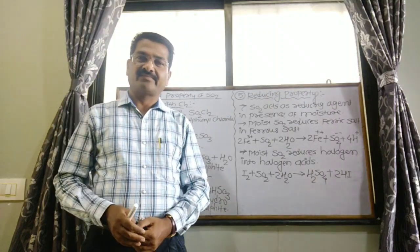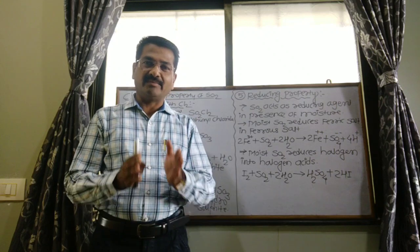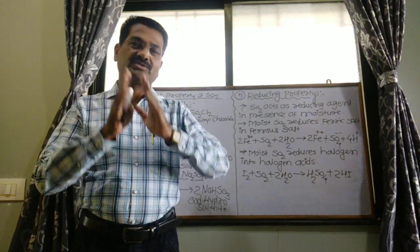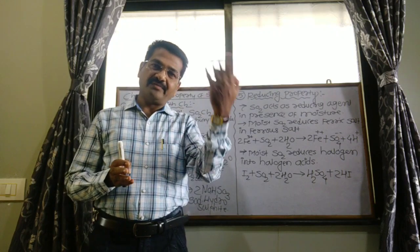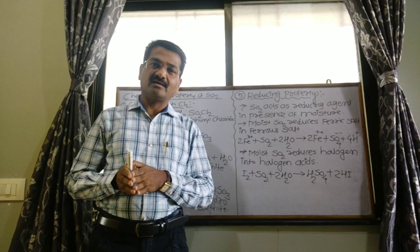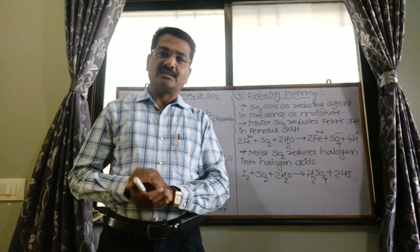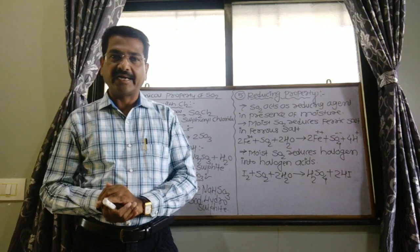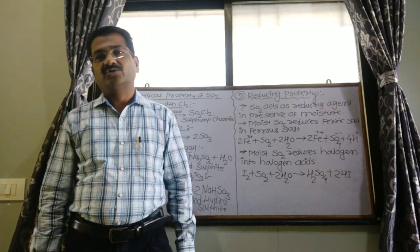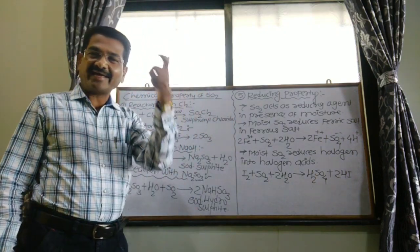In this class, we are going to discuss about the chemical properties of sulfur dioxide. In the previous period, we were discussing the preparation methods, structure, and physical properties of sulfur dioxide. The last point is the chemical properties of sulfur dioxide.